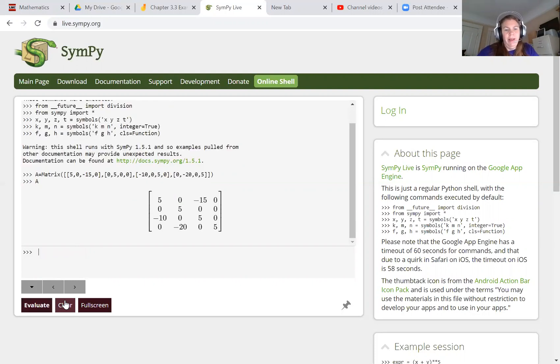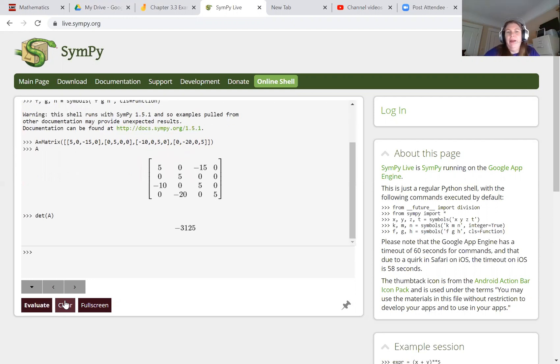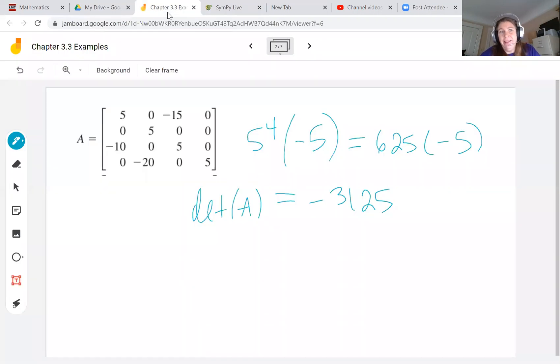Double check your matrix A, and then we can check the determinant of this matrix A, and there's our negative 3,125—an exact match for what we got by hand. In the next video, we'll look at some more examples of calculating determinants and the properties that are associated with them.